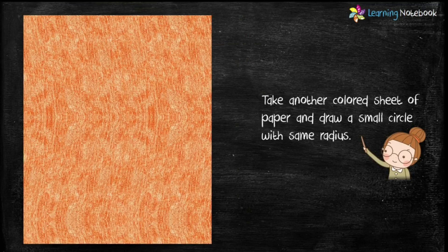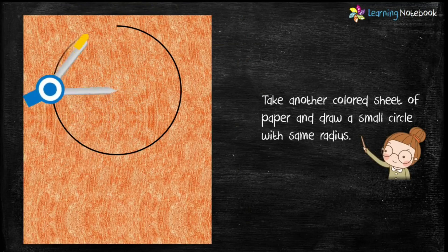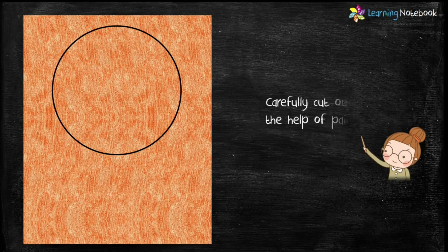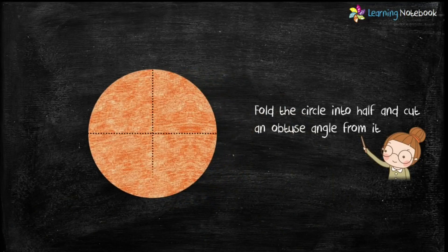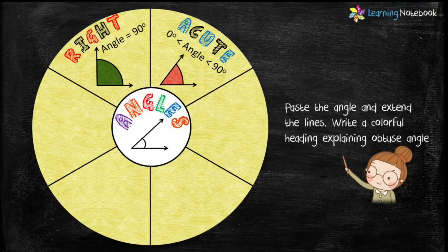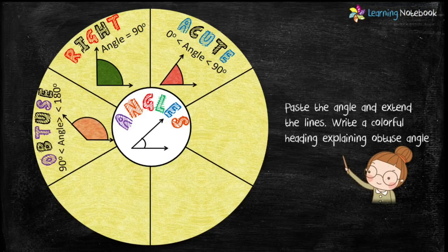Take another colorful sheet and draw another small circle with the same radius, then carefully cut it out using scissors. Fold this circle in half vertically as well as horizontally, then cut an obtuse angle from it as shown. Paste this obtuse angle on the math wheel and extend the lines. Write a colorful heading with its property that obtuse angle is greater than 90 degrees but less than 180 degrees.